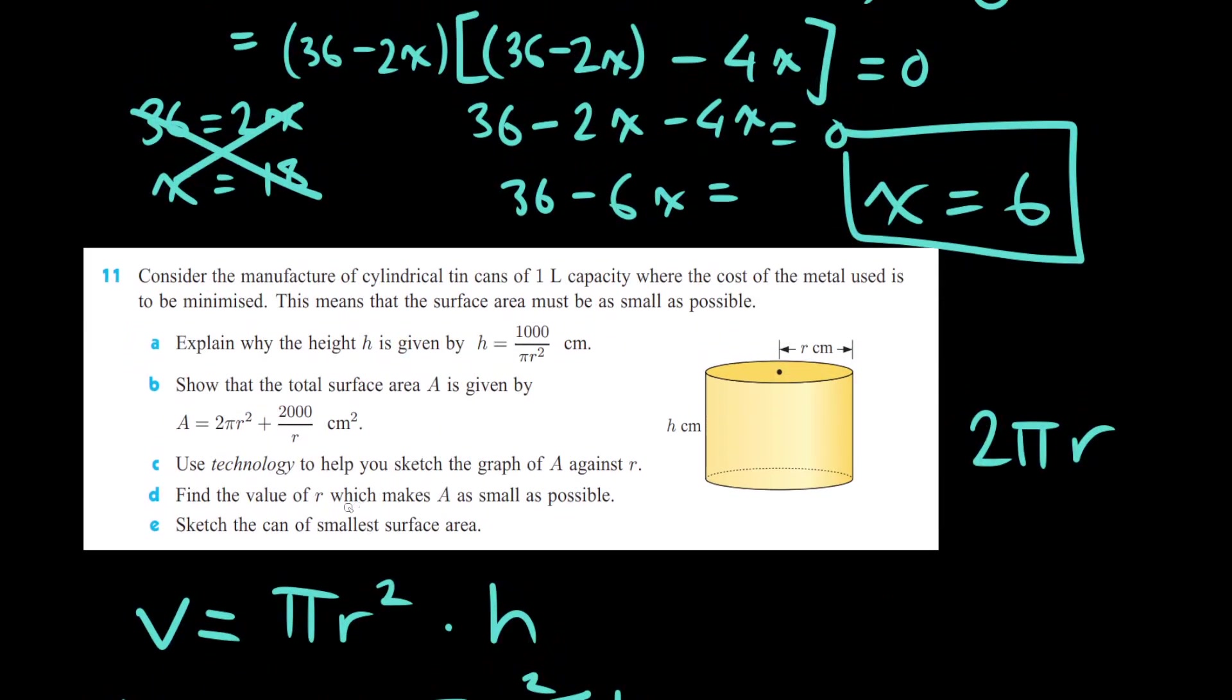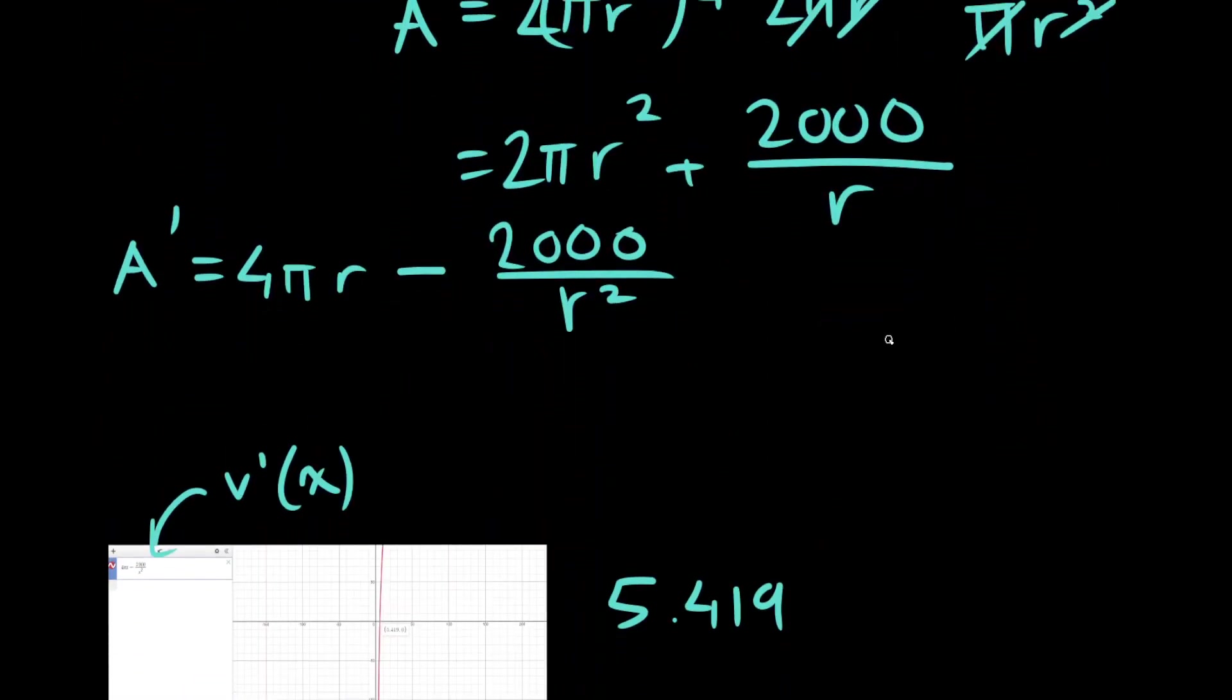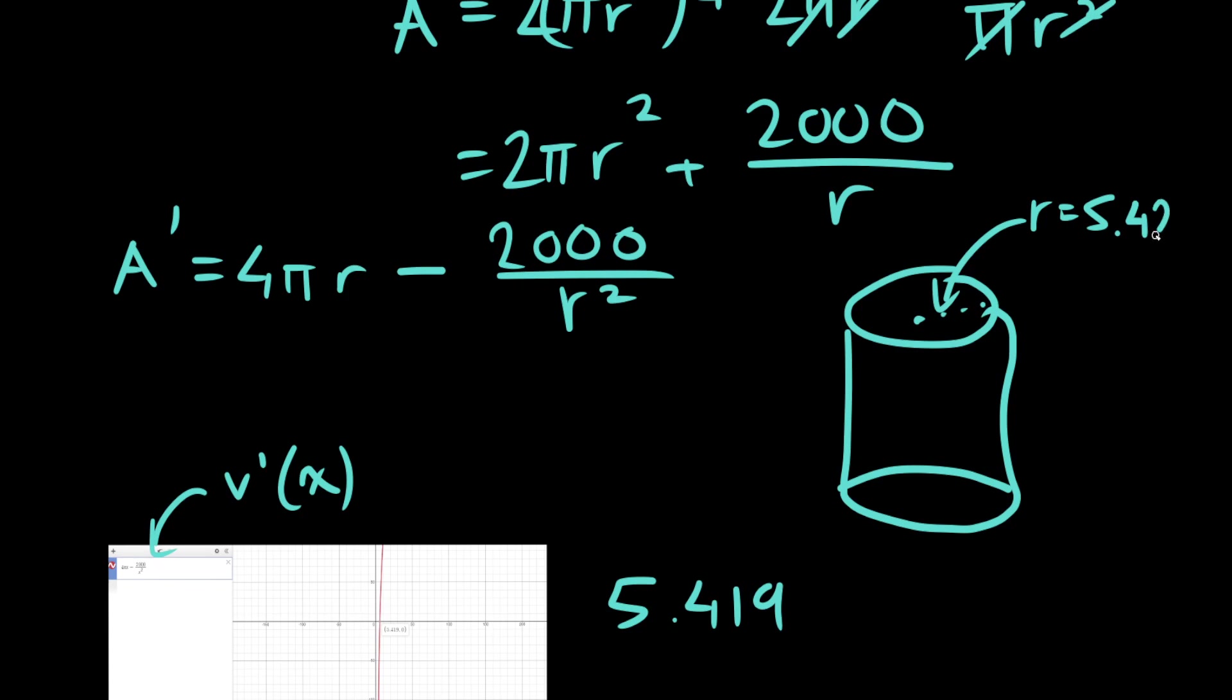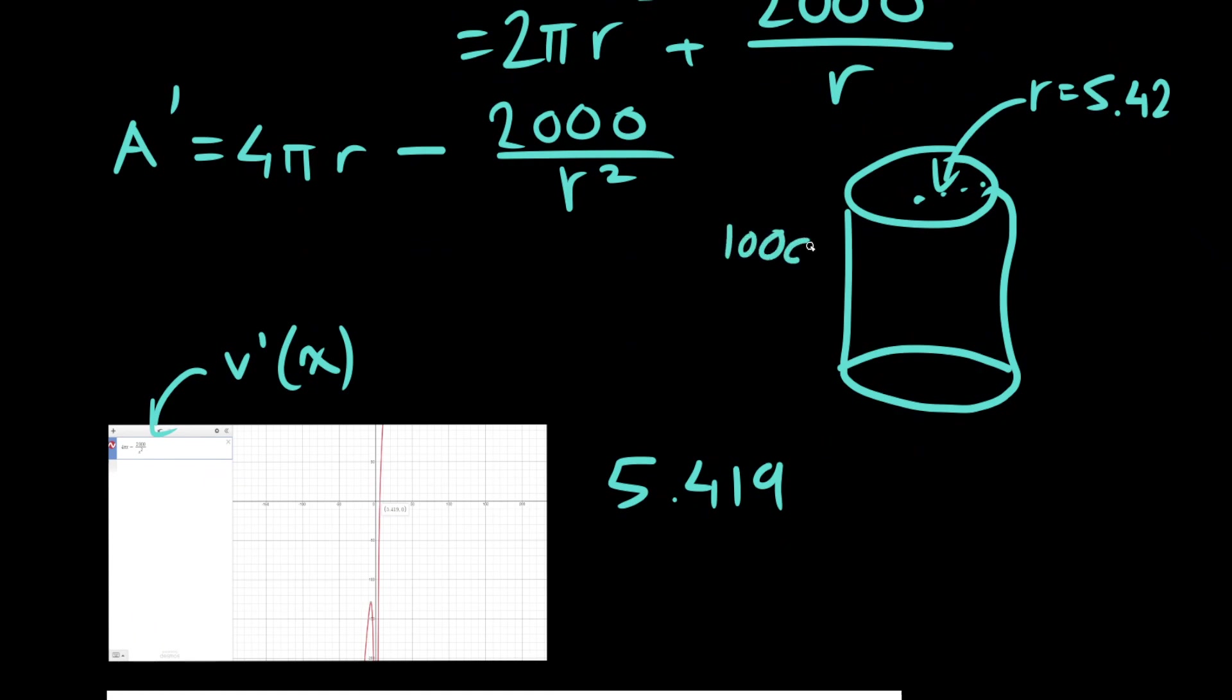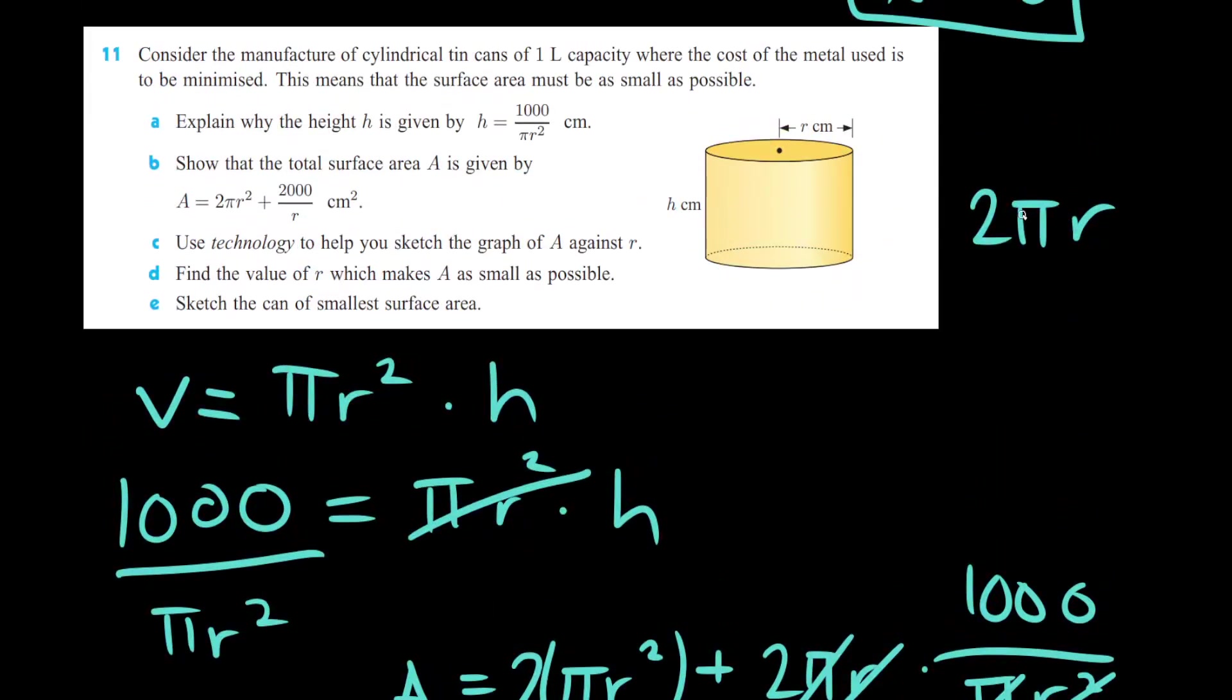And finally, they just ask you to sketch the can of the smallest surface area. So what we're going to do is just have a little drawing here. This is not an art class, don't spend too long on it, where your radius is equal to 5.42, let's say 3 sig figs. And this height we'll have to figure out backwards. We'd have to plug it into this formula here. 1,000 over pi times 5.42 squared will be our height.